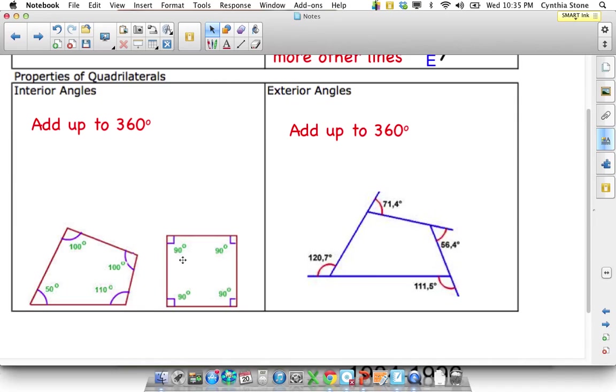Same rule applies for exterior angles. The exterior angles in a quadrilateral add up to 360. So these have decimals in them. But if I put these in my calculator, added them all up, you'd find it equals exactly 360. So exterior angles, which are just by extending a side and then finding the angle between that and the next side, the adjacent side, they add up to 360 as well.